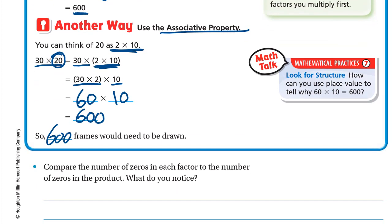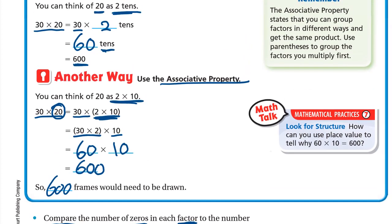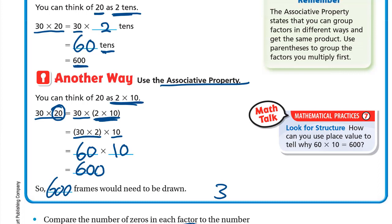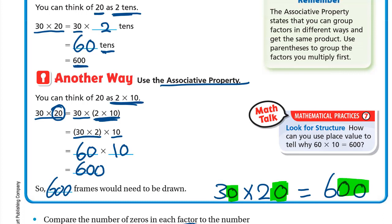Here's an important observation: compare the number of zeros in each factor — 30 and 20 — to the number of zeros in the product. In 30 × 20 = 600, the factors together have two zeros and the product also has two zeros. The zeros in the factors appear in the product. You can use this pattern to solve many of today's problems.